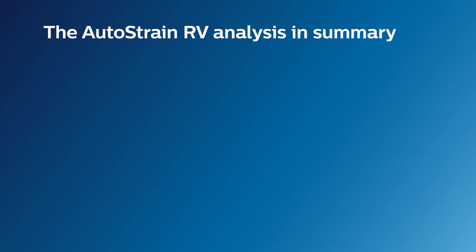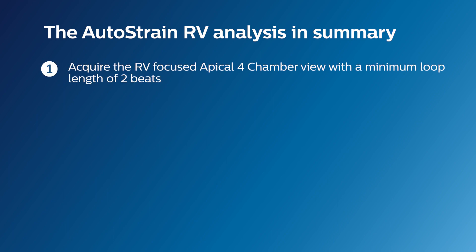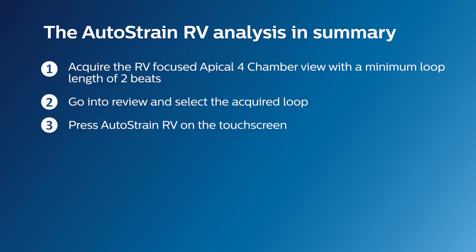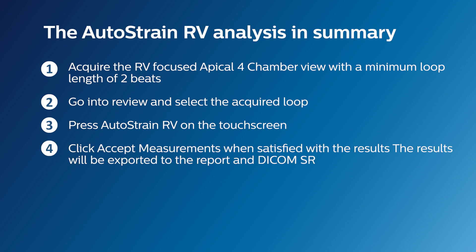To summarize the right ventricle auto strain analysis: acquire the RV-focused apical 4-chamber view with a minimum loop length of 2 beats. Go into review and select the acquired loop, then press Autostrain RV on the touch screen. Click Accept measurements when satisfied with the results. The longitudinal strain results will be exported to the report and DICOM structured report.